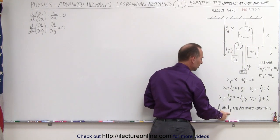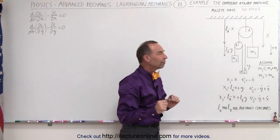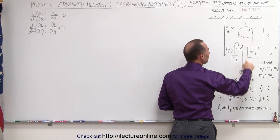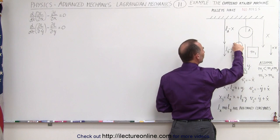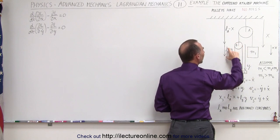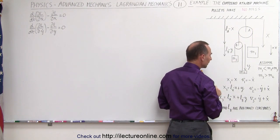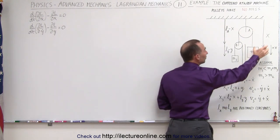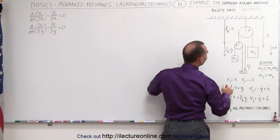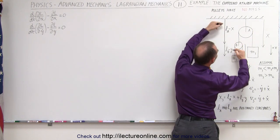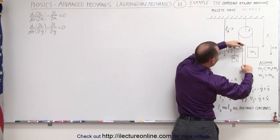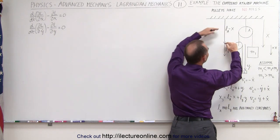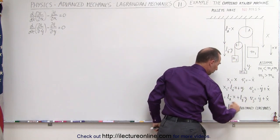L_A and L_B are simply arbitrary constants — their exact values don't matter. The distance from pulley B to M2 is y, and the distance from pulley B to M3 is L_B minus y, where L_B is another arbitrary constant. So x1 equals x, x2 equals L_A minus x plus y, and x3 equals L_A minus x plus L_B minus y.